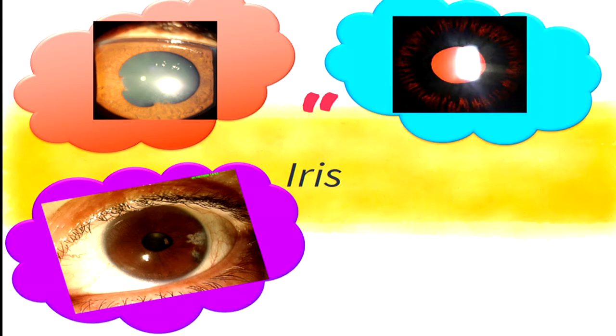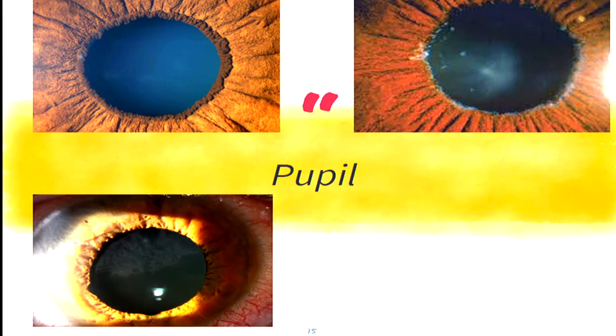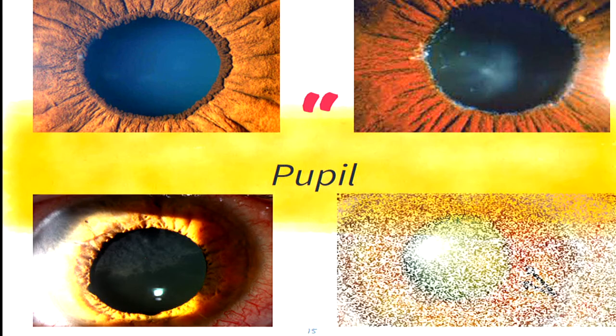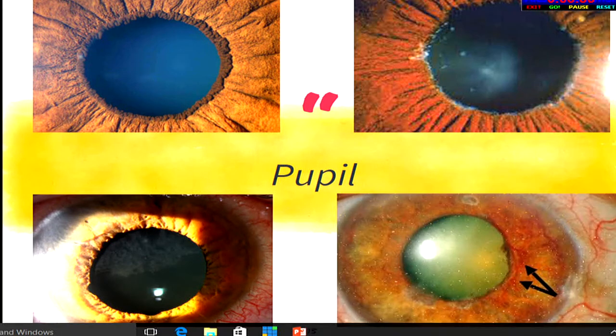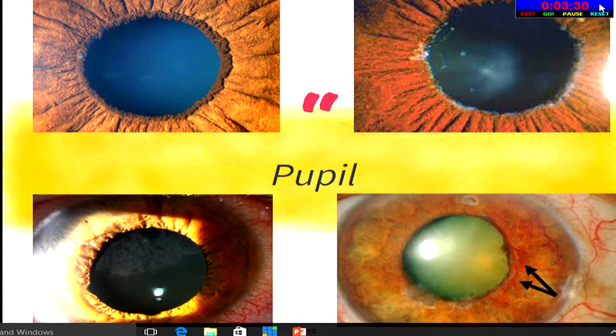Trans-illumination defects in the iris indicate pigmentary glaucoma. The margin of the pupil is extremely important: a normal pupillary ruff should be present; any deficiency suggests a previous subacute attack. White chalk-like deposits at the pupillary margin indicate pseudo-exfoliative glaucoma. In traumatic glaucoma, you might see a mid-dilated pupil with loss of sphincter, and sometimes you might see neovascular glaucoma.